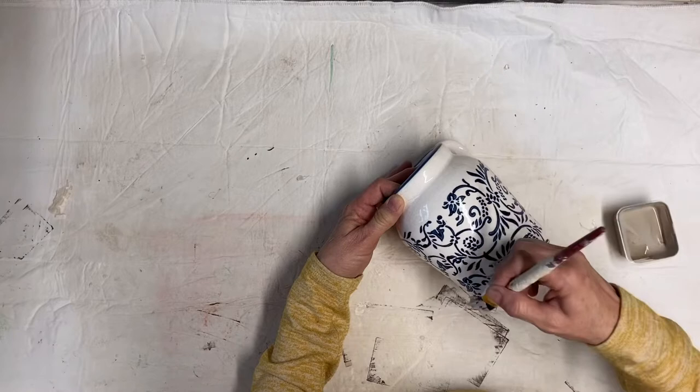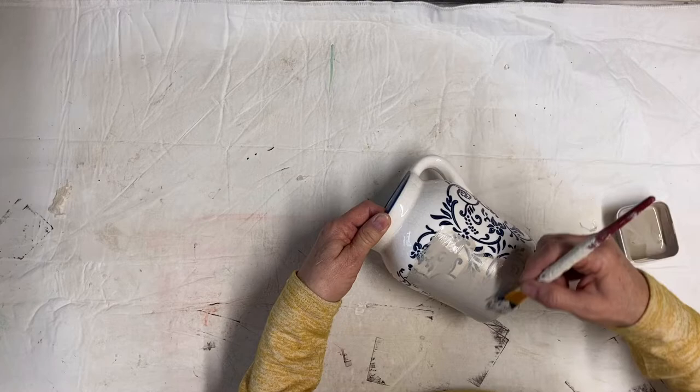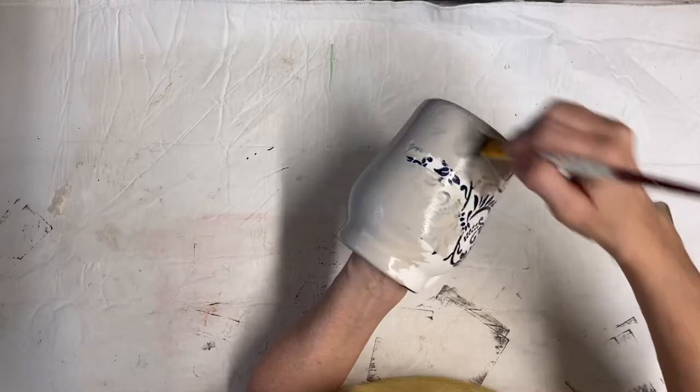Now I'm going to start with some Waverly chalk paint in the color Mineral. I'm obviously not sponsored by Waverly, but I do like this mineral chalk paint. It has the look of crocks. It's just a really good color to make an item look like a crock. Now I'm going to put a coat on this.